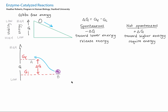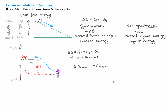We can also define a delta G for the reverse process. Now G initial is at point B, and G final is at point A. As you can see, delta G for this reverse process is positive, and the same magnitude as it was for the forward process. This is true in general: the delta G of a forward and reverse process have the same magnitude, but opposite signs.